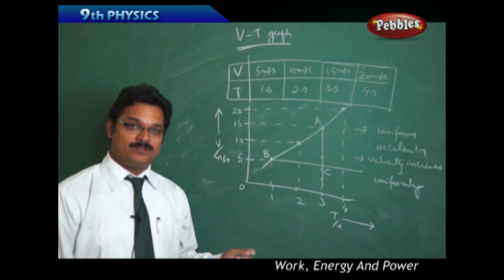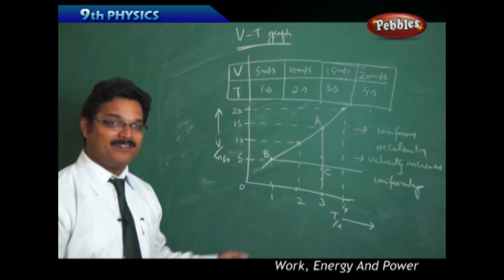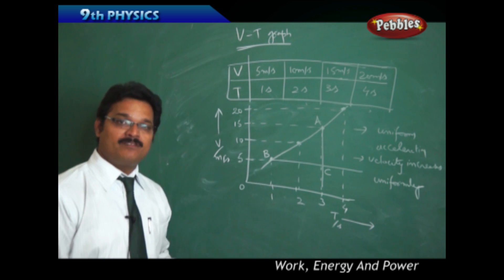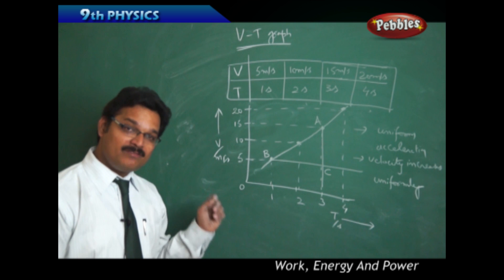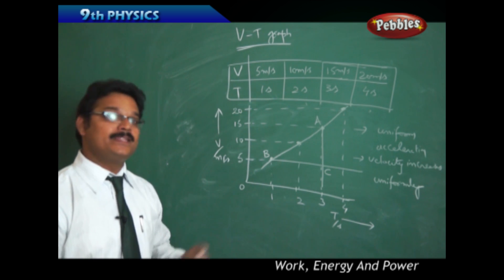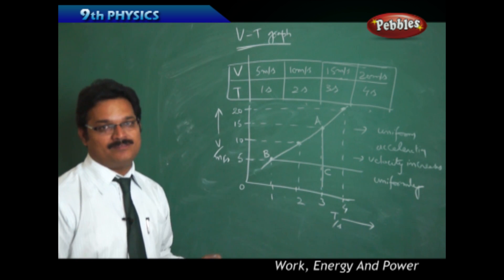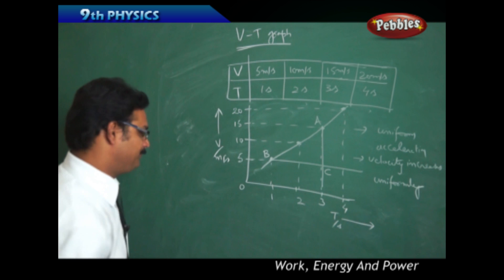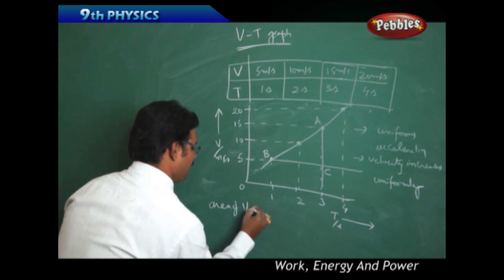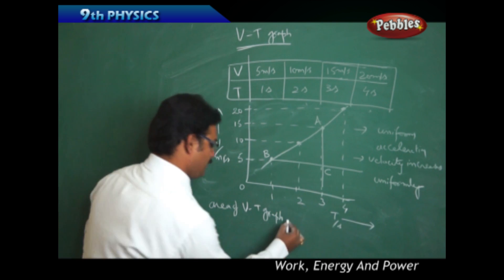There is another advantage to using a VT graph. You can find the slope of the VT graph to get acceleration, and you can also find the distance traveled by taking the area of the VT graph. Let me explain — the area of the VT graph gives the distance traveled.